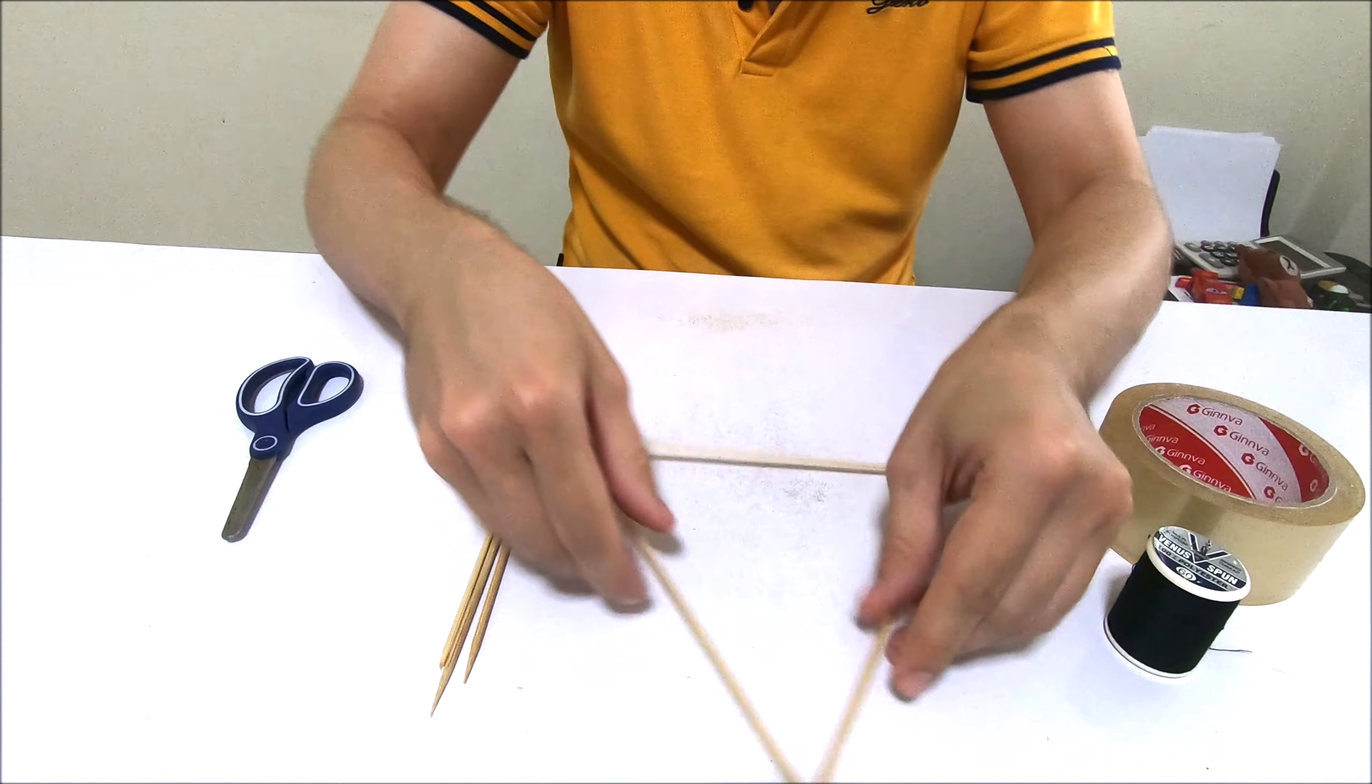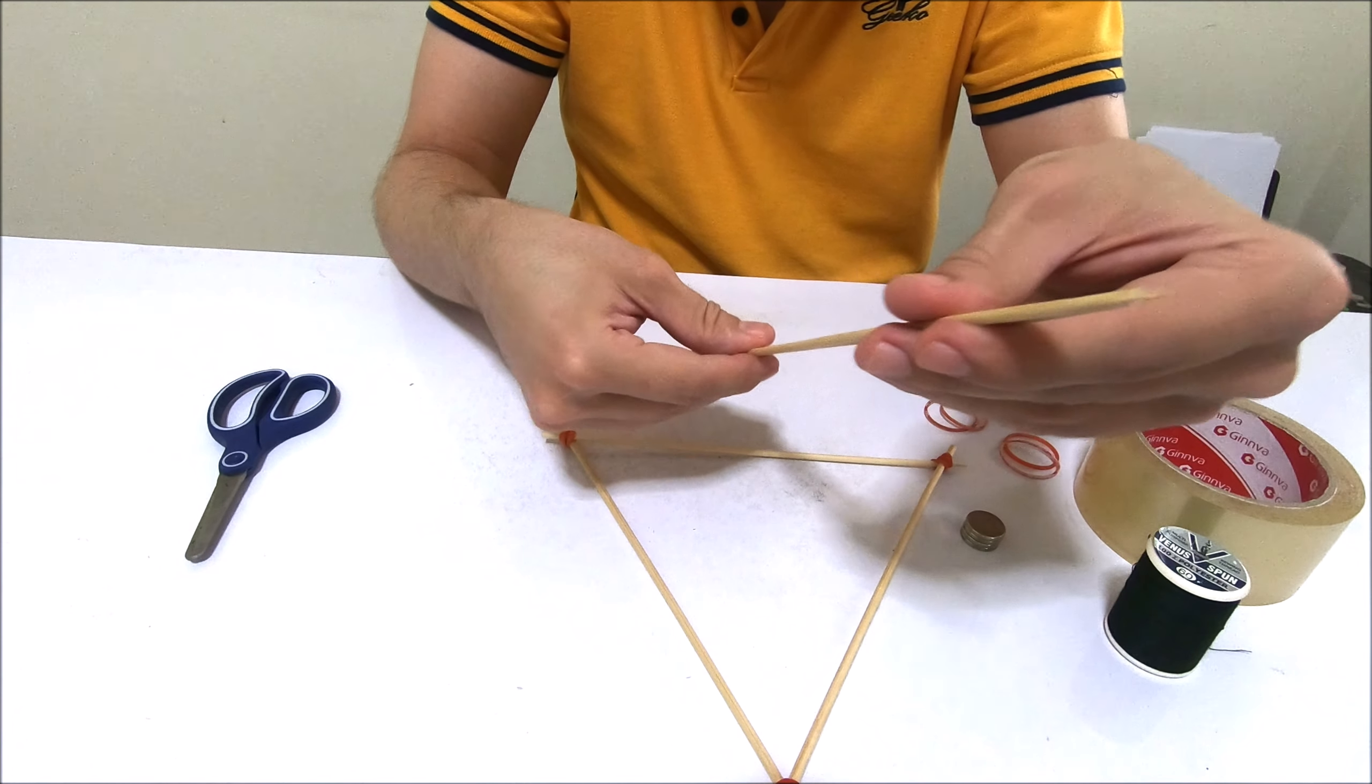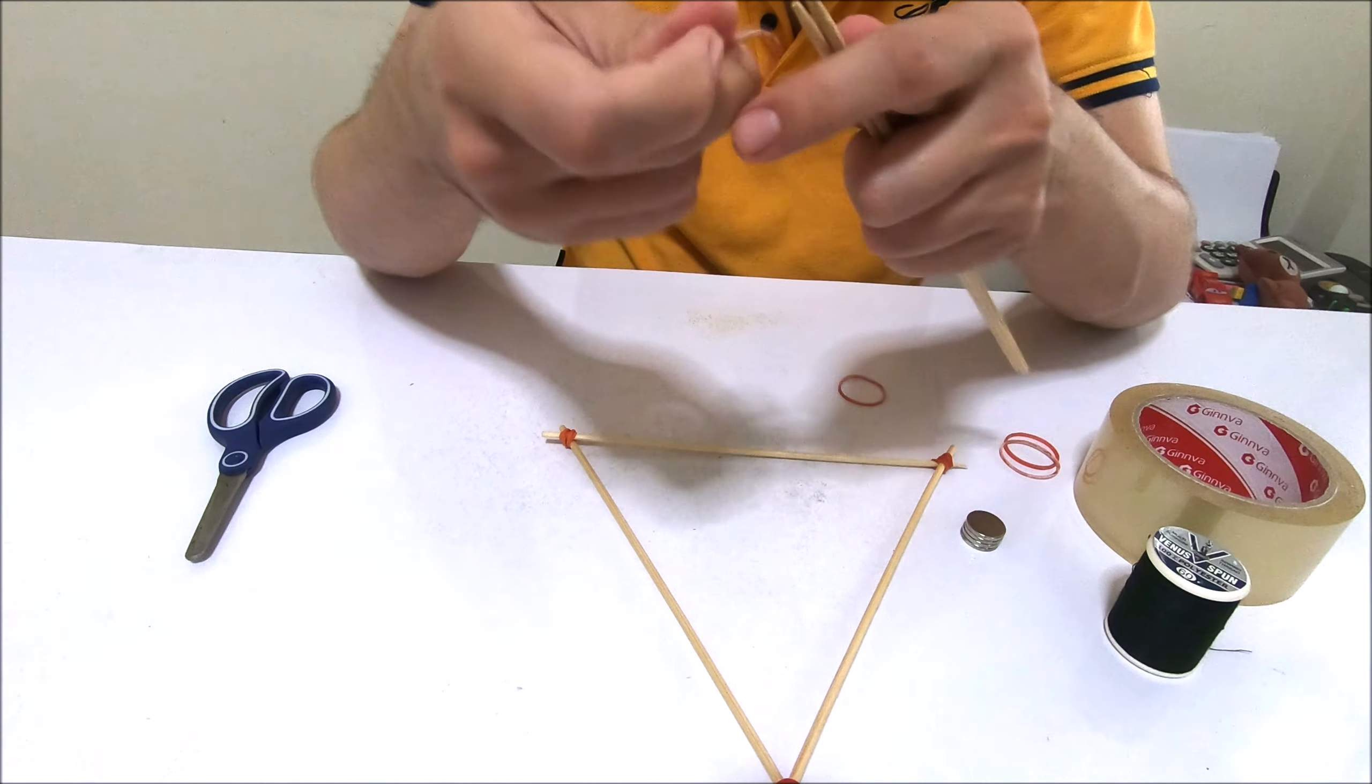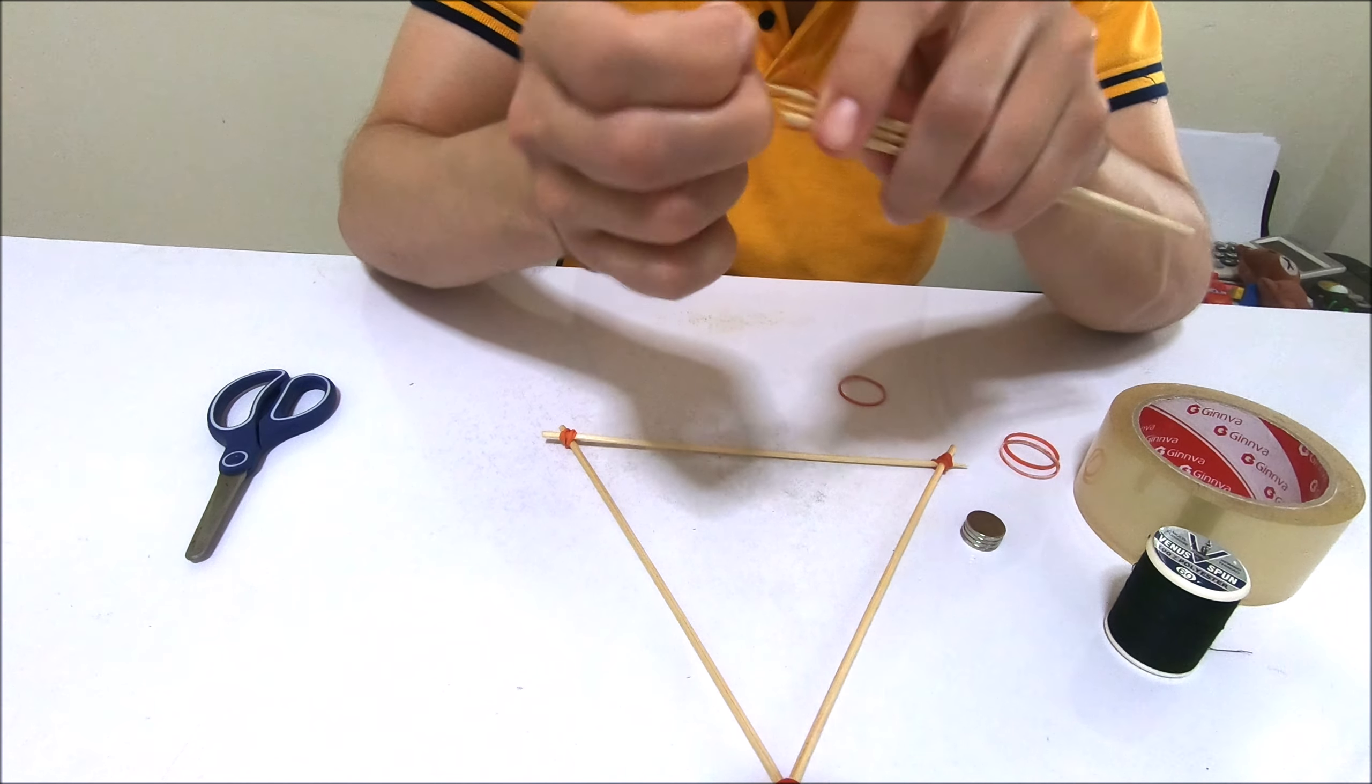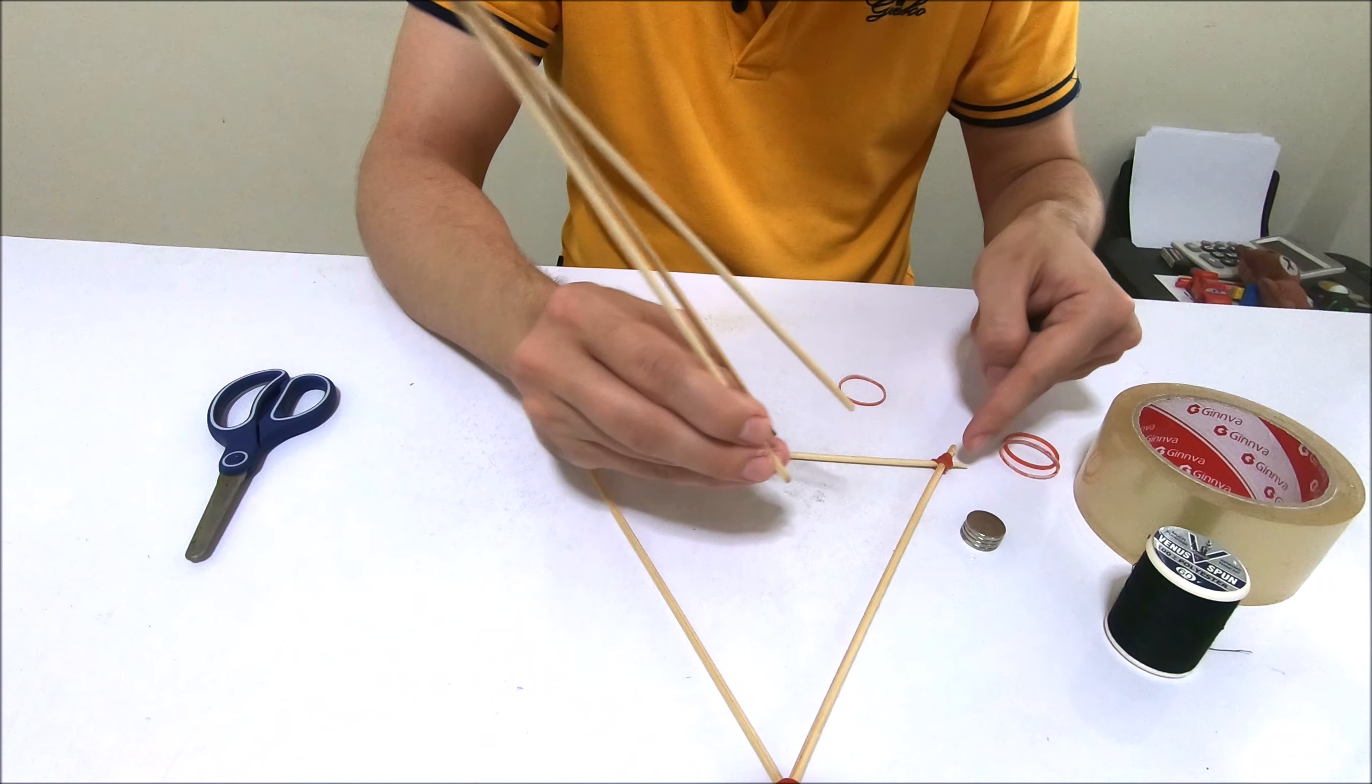Okay, so this is the first side. Now we're going to build the rest upwards. So what I would do is take the rest of the three, the remaining three pieces of the meatball sticks, and hold them together. One of them is a little shorter but that's fine, no problem. And then fasten them together—another rubber band like that. Make sure it's tight enough so it holds well.